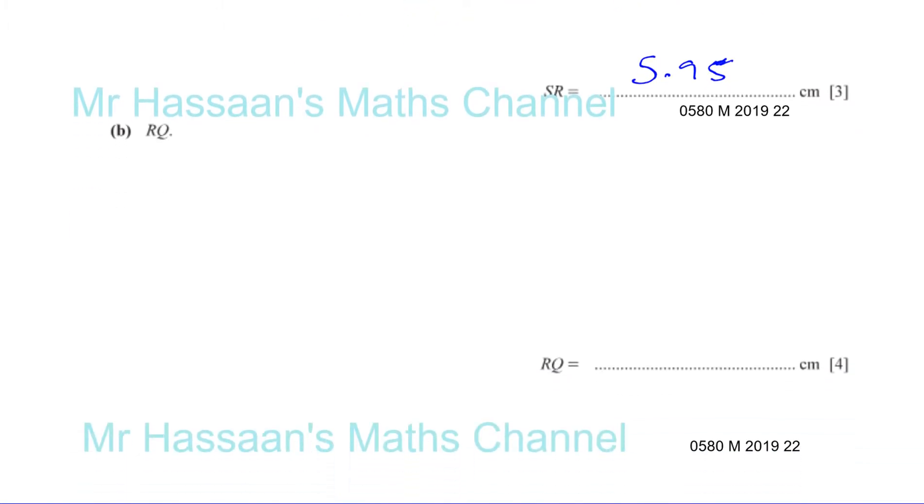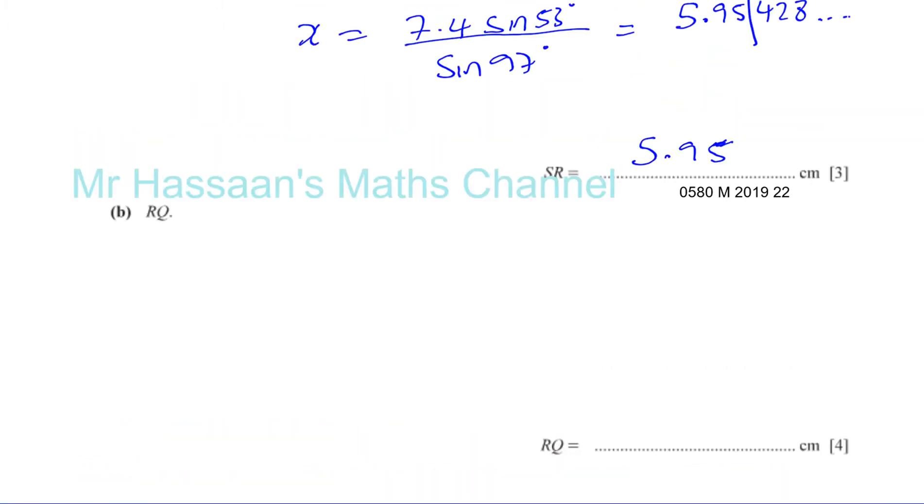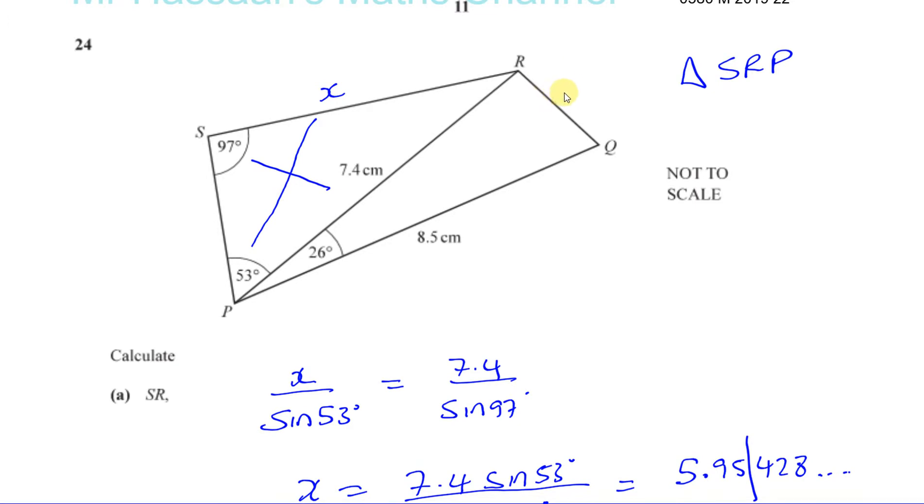Now next we've got to find what RQ is. RQ is this length over here. I'm going to call it length Y. Now this is a case where we know the angle opposite the side we're trying to find. We don't know any of the other angles, but we do know the two other sides of the triangle. And that's a classic case of the cosine rule.